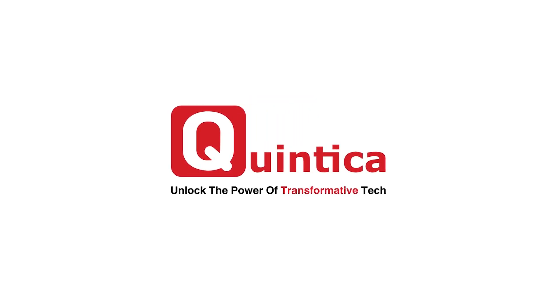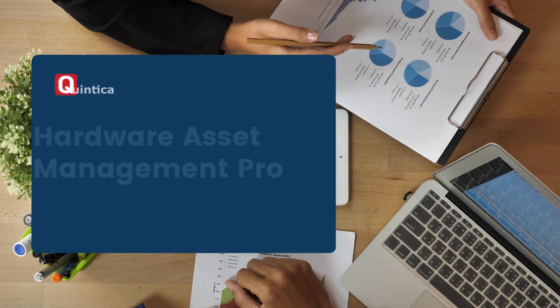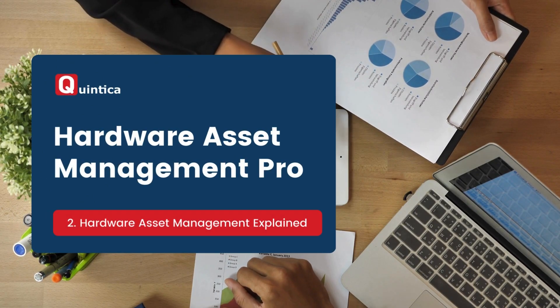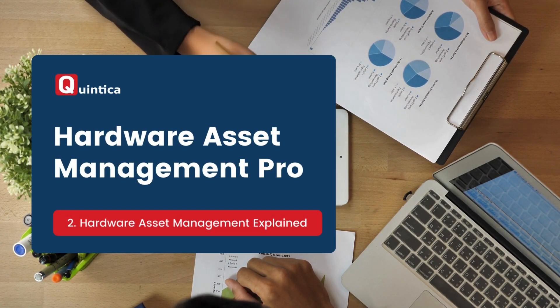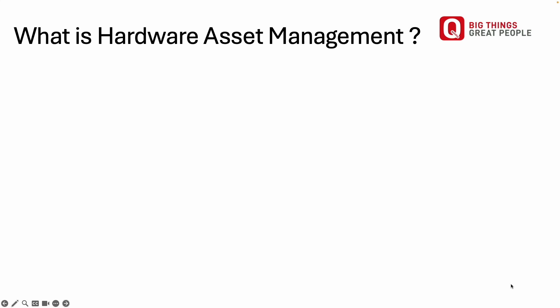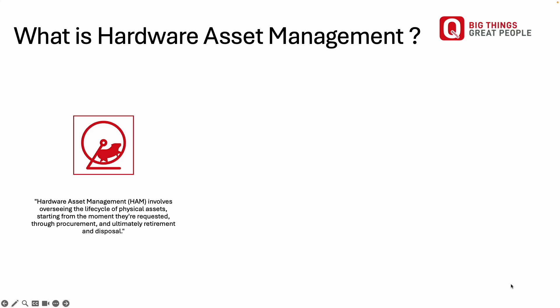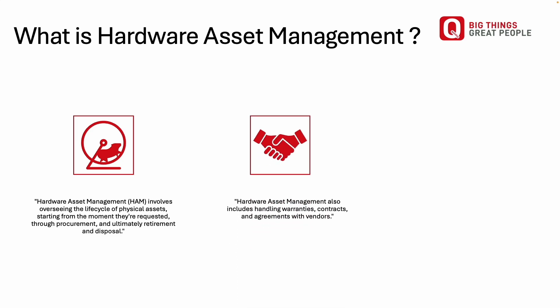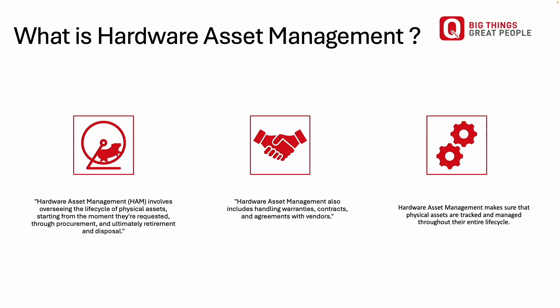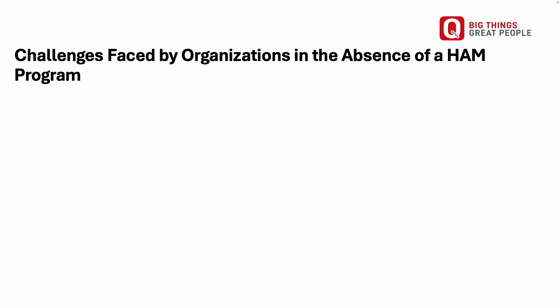Hi everyone, in today's session I'm going to explain what hardware asset management is and how your organization can benefit from it. HAM involves overseeing physical assets from the moment they are requested and procured until they are eventually retired and disposed of. HAM includes managing warranties, contracts, and vendor agreements, and ensures that physical assets are properly tracked and managed throughout their entire life cycle.